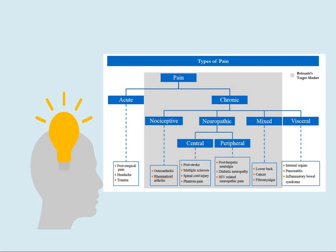Neuropathic pain can be central or peripheral. Central neuropathic pain is found in post-stroke, multiple sclerosis, spinal cord injury, or phantom pain. Peripheral neuropathic pain includes post-herpetic neuralgia, diabetic neuropathy, and HIV-related neuropathic pain. Mixed pain — with some controversy — includes lower back pain, cancer, or fibromyalgia. Visceral pain involves internal organs such as pancreatitis or inflammatory bowel syndrome.